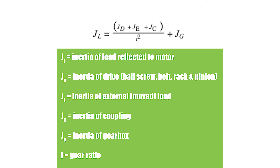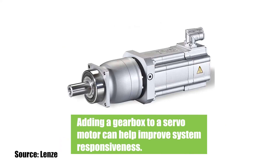Notice that the inertia of the gearbox, J sub G, is added to the load inertia, but its effect is typically small compared to the reduction provided by the gear ratio. While a perfect inertia ratio of 1 to 1 is impractical in many cases and doesn't typically provide the most efficient drivetrain, the goal of most servo system designs is to keep the inertia ratio as low as practical to achieve high system responsiveness. Reducing the load inertia by adding a gearbox also means that a smaller motor with lower inertia can be used while still maintaining a desirable ratio between the motor and the load.